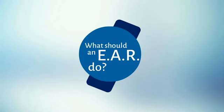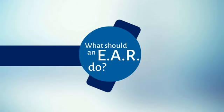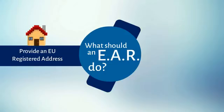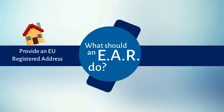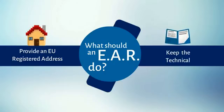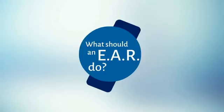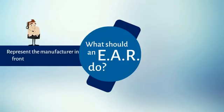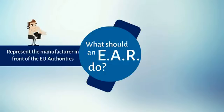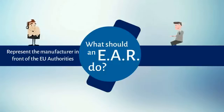What should an EAR do for the manufacturer? The EAR should: 1. Provide the manufacturer with a registered address in the EU to be mentioned on the product packaging. 2. Keep, at his registered address in Europe, the technical documentation available for inspection by the EU authorities. 3. Maintain constant availability to represent the manufacturer in front of the EU Commission, EU authorities, EU certification bodies, and the European users.